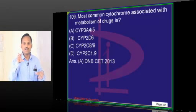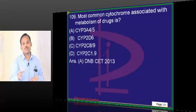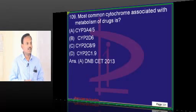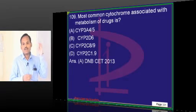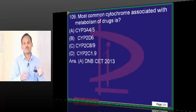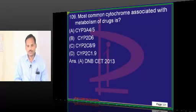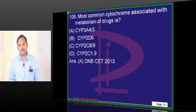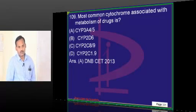The most important is the fourth isomer. A is the subfamily, 3 is the family. So this is like grandfather, father, son — cytochrome P450, then family 3, subfamily A, and specific isomer number 4.